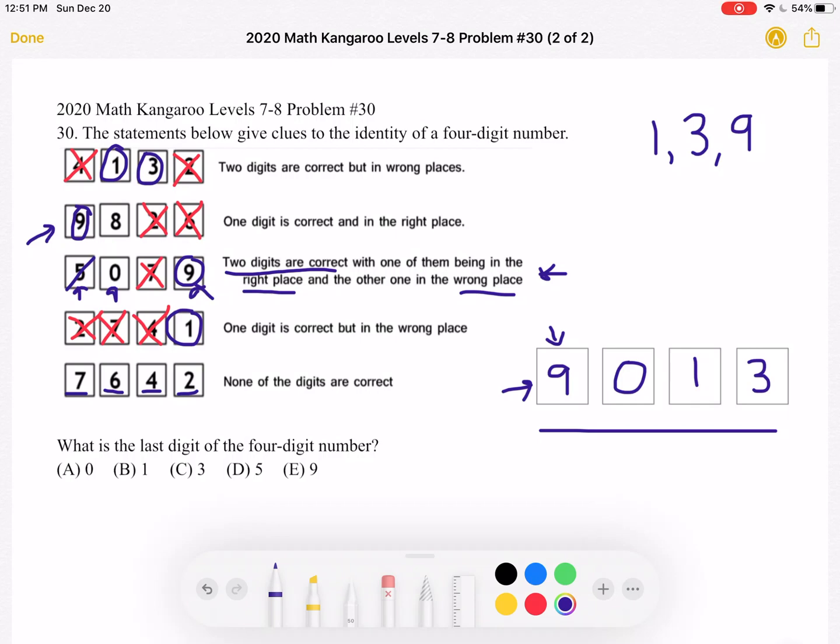So for the question, what is the last digit of the four digit number? We know it must be 3, which is answer choice C. Thank you so much for watching and please subscribe if you would like to see more videos.